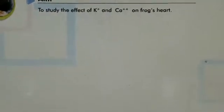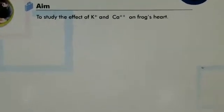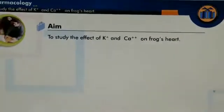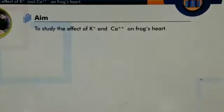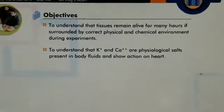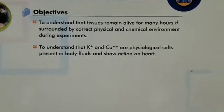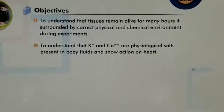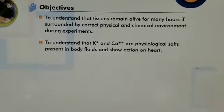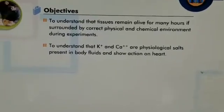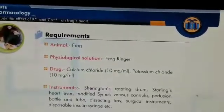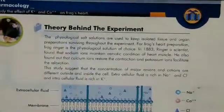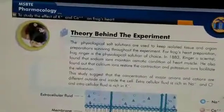Today we will see the fourth experiment of pharmacology, that is to study the effect of potassium and calcium ions on frog's heart. Tissues remain alive for many hours if surrounded by the correct physical and chemical environment. Potassium ions and calcium ions are physiological salts present in body fluids and show action on the heart.